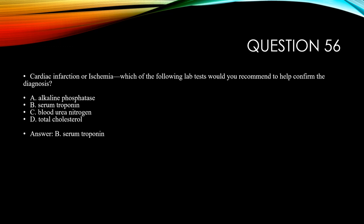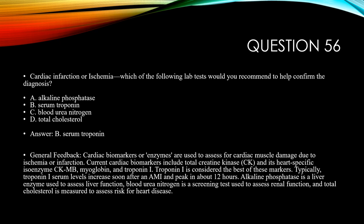The answer is B, serum troponin. Cardiac biomarkers or enzymes are used to assess for cardiac muscle damage due to ischemia or infarct. Current cardiac biomarkers include total creatine kinase and its heart-specific isoenzyme CK-MB, myoglobin, and troponin I. Troponin I is considered the best of these markers — serum levels increase soon after an MI and peak in about 12 hours. Alkaline phosphatase is a liver enzyme; blood urea nitrogen assesses renal function; and total cholesterol measures risk for heart disease.